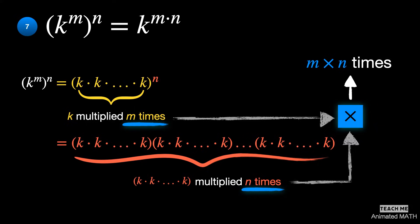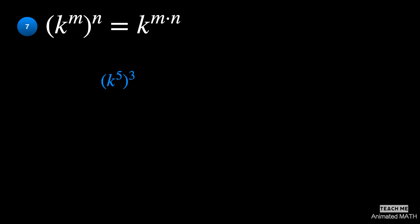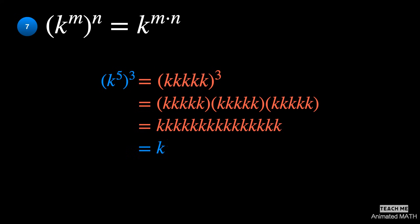Here is an example. k^5 raised to the power of 3 is equal to k, k, k, k, k multiplied 3 times, which results in k multiplied to itself 15 times, or k to the 15th power.